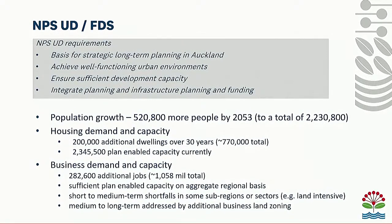In terms of business demand and capacity, the population growth translates to around 280,000 additional jobs required — that's around a 30% growth. The initial housing and business assessment shows we have sufficient enabled business capacity at a regional basis, though there may be some shortfalls in the short and medium term in sub-regions and particularly in land-extensive sectors. In the medium to long term, more business land is coming on stream, especially in the south and the northwest, which should address that issue.